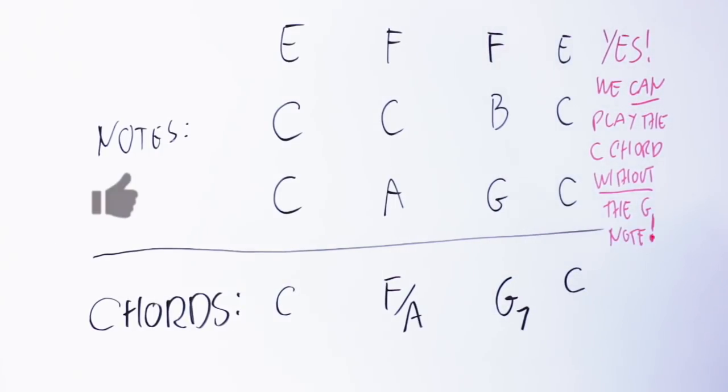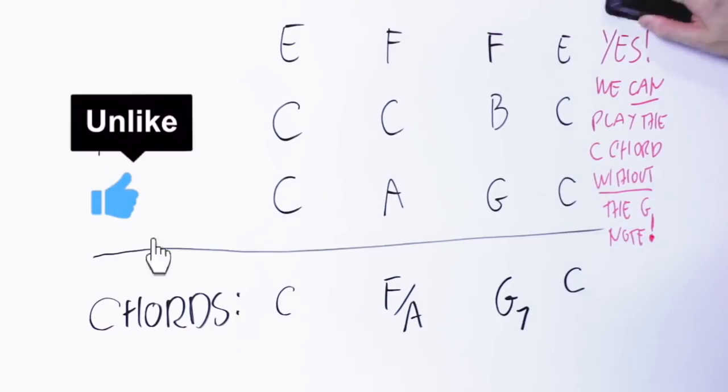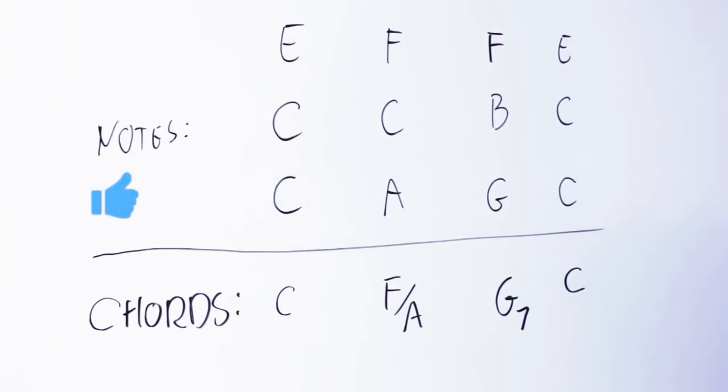It's important to notice that when we resolve the G seventh chord to the C chord, the third note of the G seventh, B, moves up to C and the seventh note of G seven, F, moves down to E. So the third of the dominant chord moves up and the seventh moves down. This becomes important later.